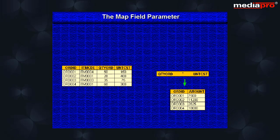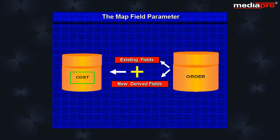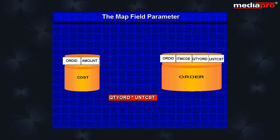Let us see how field mapping is implemented. First of all, we need to create a new physical file with a record format that contains all the fields required from the actual physical file along with the new derived fields. In the cost file, we will include the order ID from the order file and also derive a new field amount that will be the product of the quantity field and the cost per unit field.